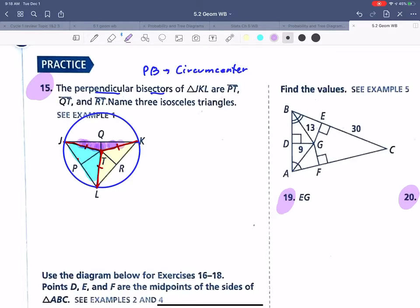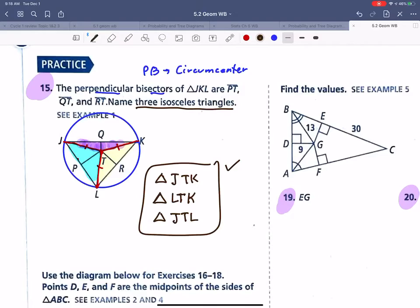We know that the radius of a circle, all the radiuses of a circle are equal. So the yellow one is an isosceles triangle, this blue one would be an isosceles triangle, and this purple one would be an isosceles triangle. So that would be triangle JTK, triangle LTK, and triangle JTL. Nice work.